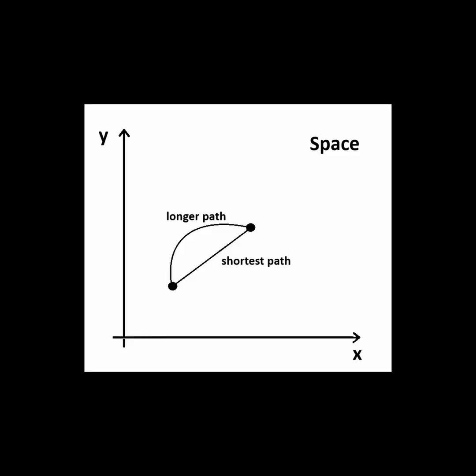To understand that, let's first look at a simpler situation involving travel through space without time. If we travel through space and keep track of our distance as we move, we know that a straight line between two points would be the shortest path.